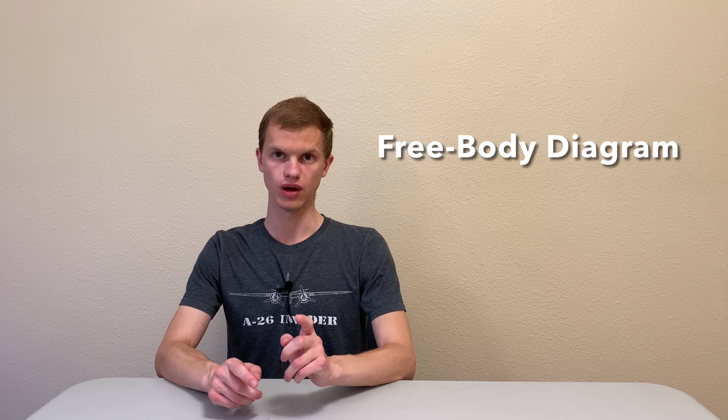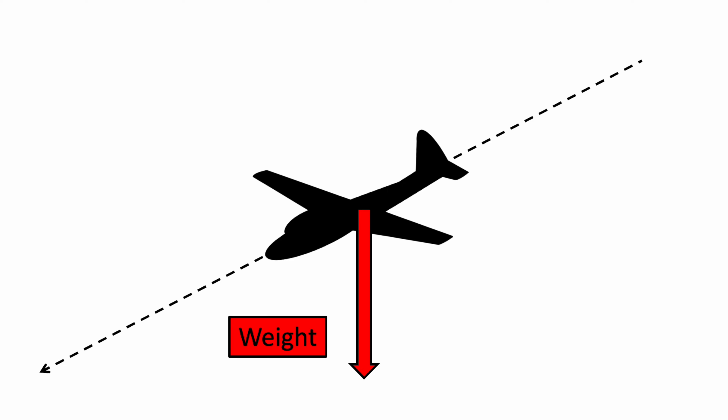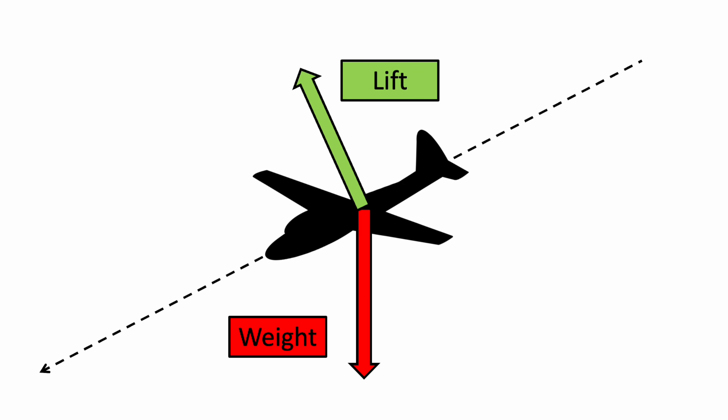Now let's take a closer look at the forces acting on a glider using a free body diagram — a diagram that shows all of the forces acting on an object, how strong they are, and what direction they act in. Consider a glider descending at a constant speed; the dashed line shows the direction it's flying. The first force is weight, which always acts downwards. The second force is the lift force produced by the glider's wings, which always acts at a right angle to the direction the airplane is flying.